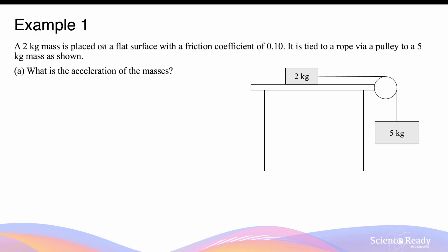A 2kg mass is placed on a flat surface with a friction coefficient of 0.1. It is tied to a rope by a pulley to a 5kg mass as shown. What is the acceleration of the masses?